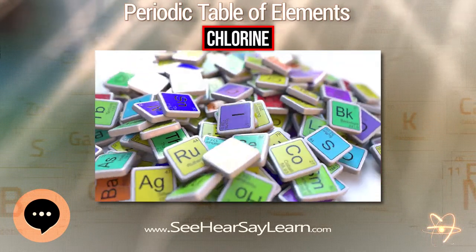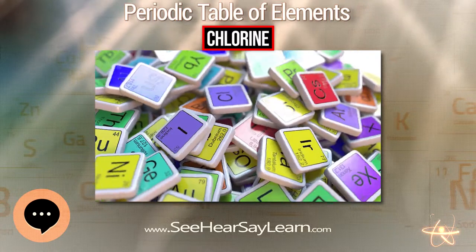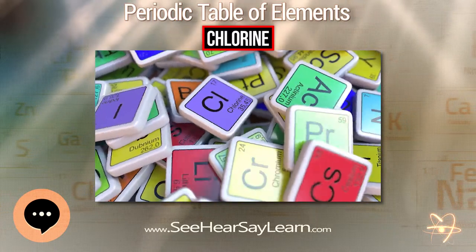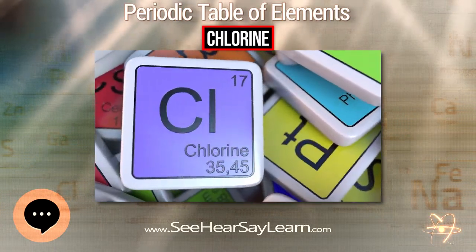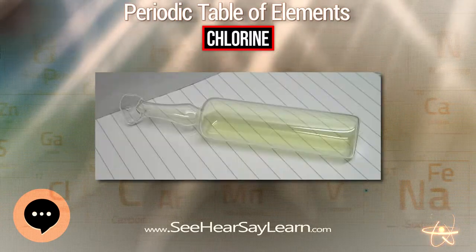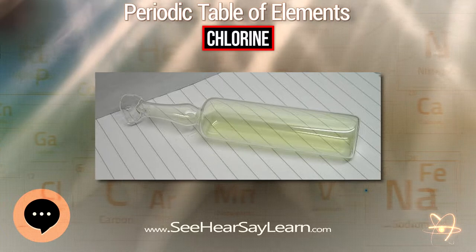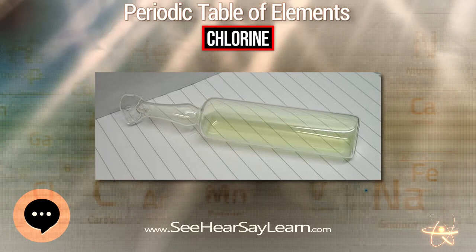Small quantities of elemental chlorine are generated by oxidation of chloride to hypochlorite in neutrophils as part of the immune response against bacteria.